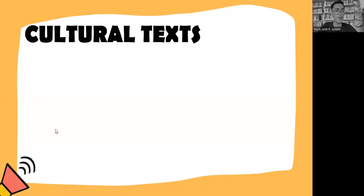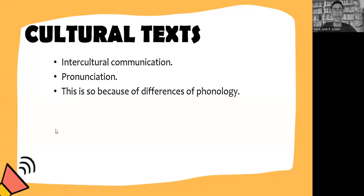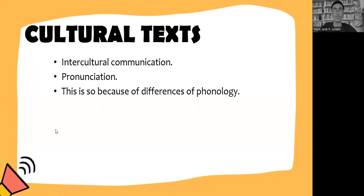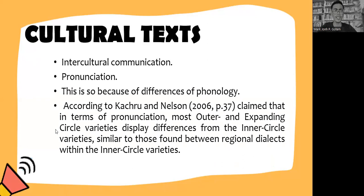So what is cultural text? We all know that intercultural communication has an important role to play in effective communication, and pronunciation is one of the causes of miscommunication. This is because of differences in phonology — the sound system, or the way words are pronounced. According to Pacro and Nelson (2006, p. 37), most outer and expanding circle varieties display differences from the inner circle varieties, similar to those found between original dialects within the inner circle. We already discussed the inner, outer, and expanding circles, so you have an idea about that.